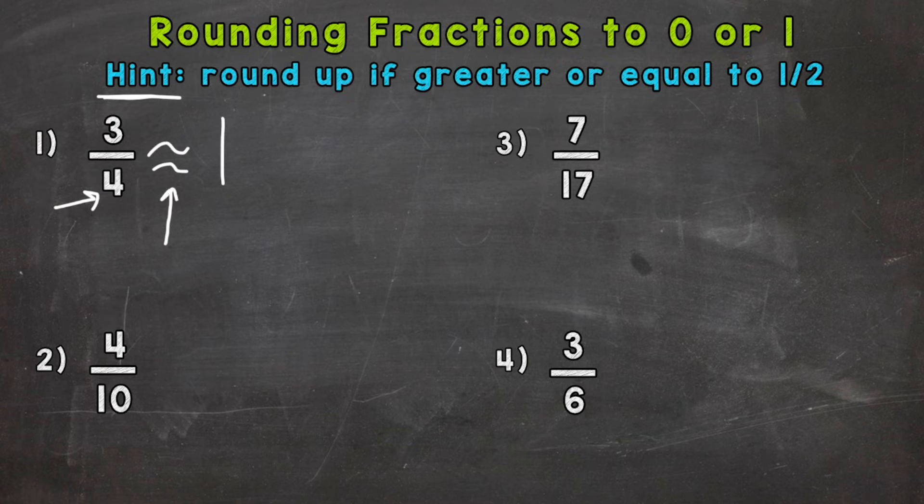This symbol here means approximately or close to, and we can use it. It's helpful when rounding, so we don't have to put an equal sign. For example, if we put 3 fourths is equal to 1, that's not correct. 3 fourths is not equal to 1, but it is close to or rounds to 1.